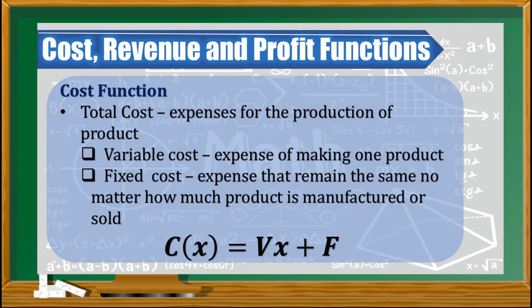The cost function: total cost refers to the expenses for the production of a product, and it contains two parts — variable cost and fixed cost. Variable cost is the expense of producing or making one product; it depends on the quantity produced and varies with the volume of production, including expenses on raw materials, direct labor, and so on. Fixed cost refers to expenses that remain the same no matter how much product is manufactured or sold, including expenses for rent, utilities, wages of employees, loan payments, and more.